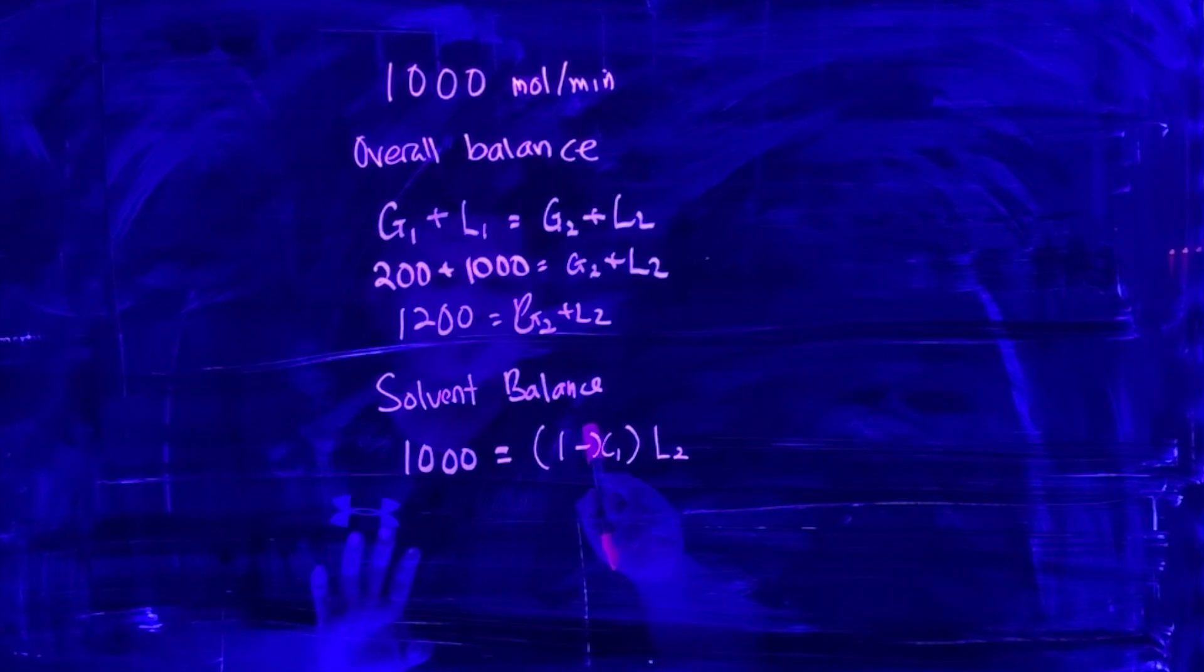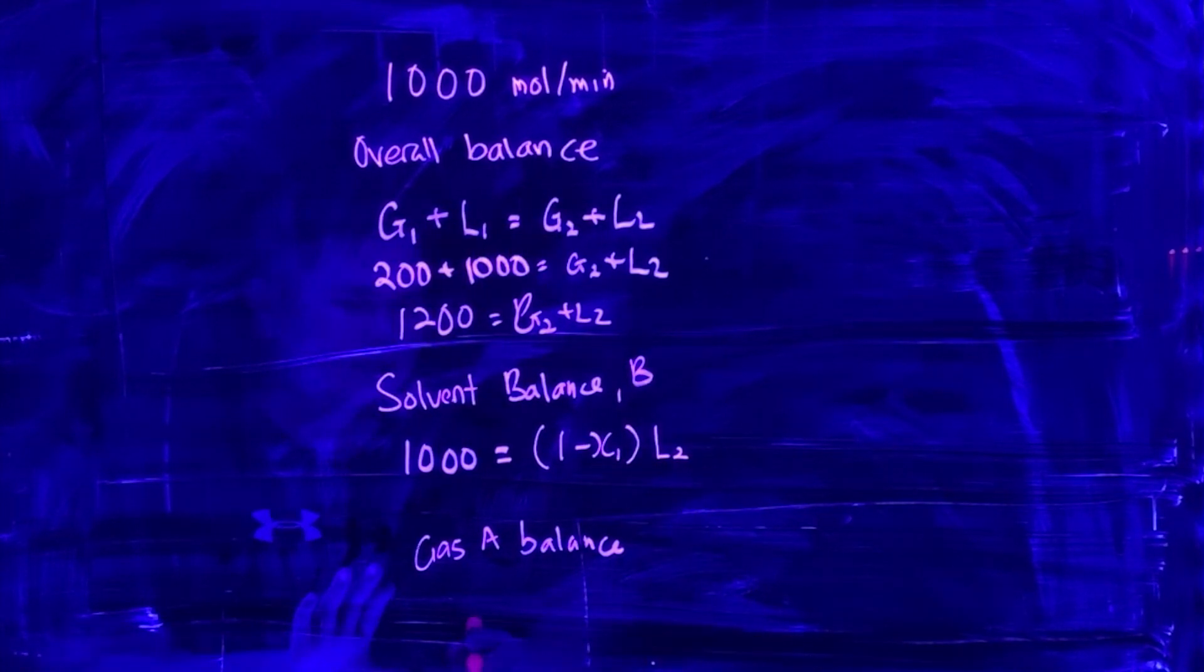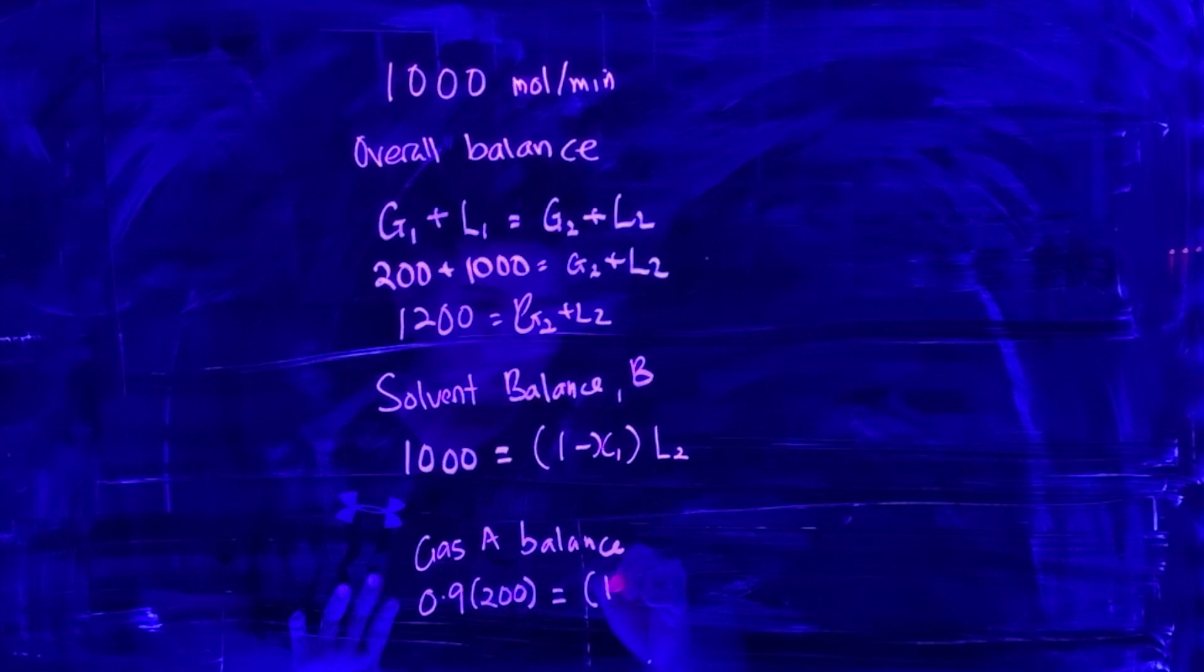We're also doing the gas A balance. This is the solvent balance for solvent B. For gas A balance, we know that 0.9 × 200 = (1 - y1)G2, and this is 180.